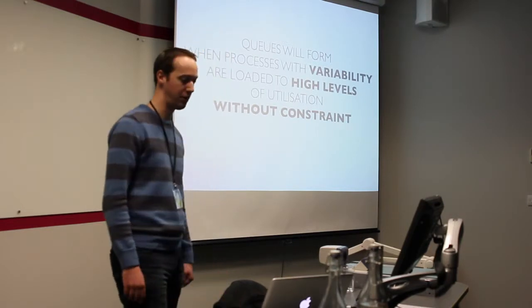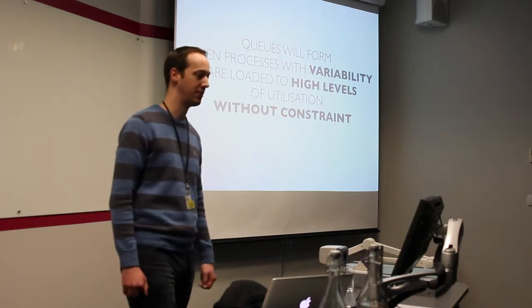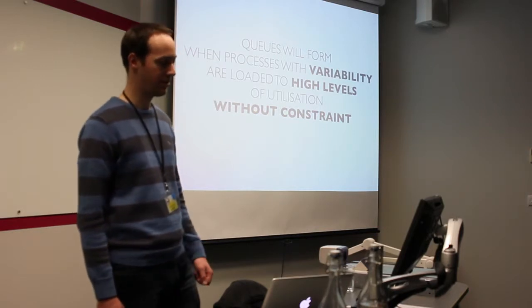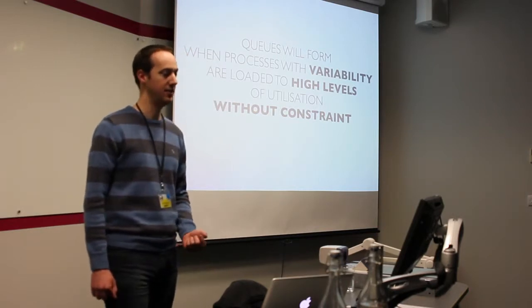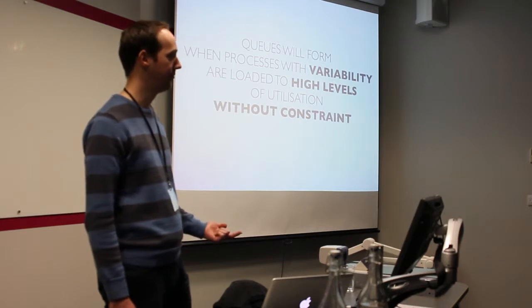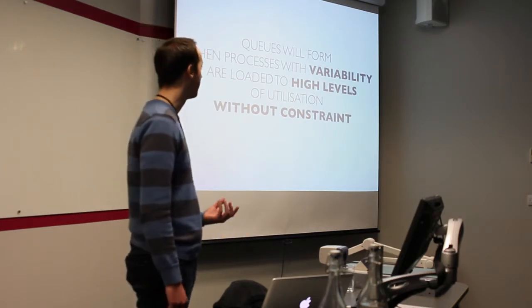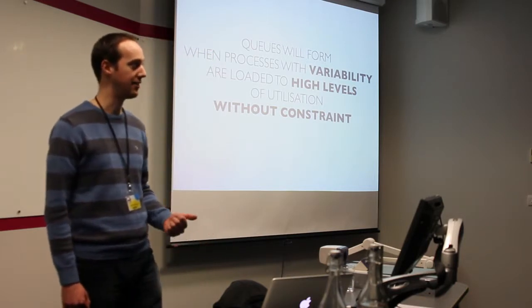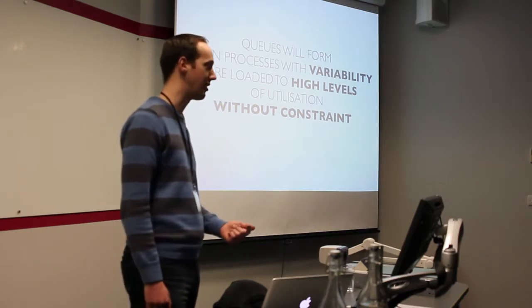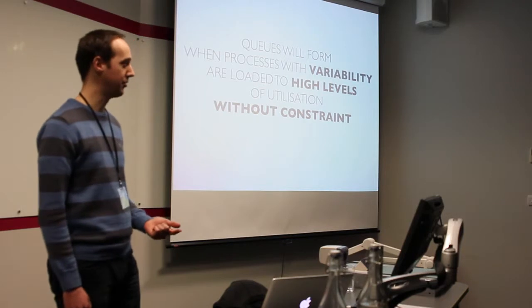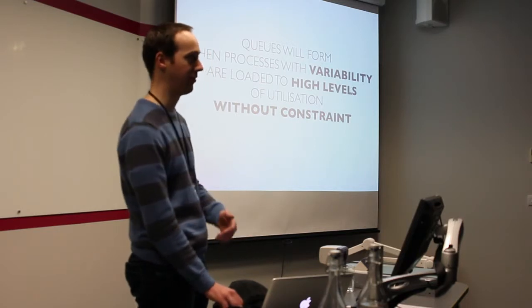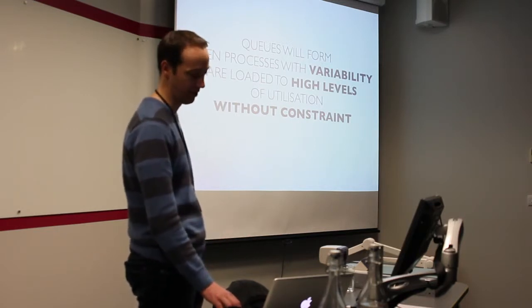Queues will form when processes with variability are loaded to high levels of utilisation without any constraints. Thinking about this in terms of web traffic — can you predict when your peaks are going to come? A cafe can either hire loads of staff to work at peaks, shut the doors, or have a bit of a queue. For a cafe that's a bad thing, but for a web server that's probably a good thing so we can satisfy all our requests.